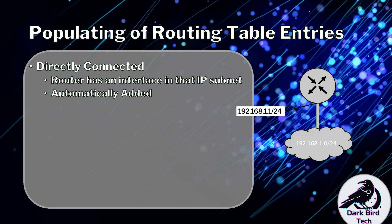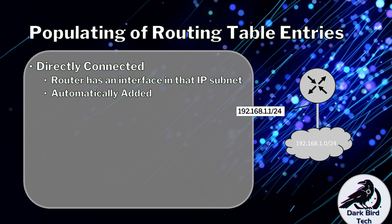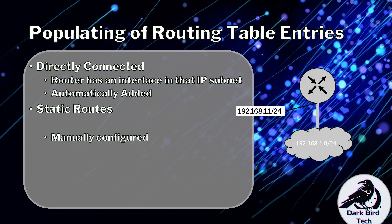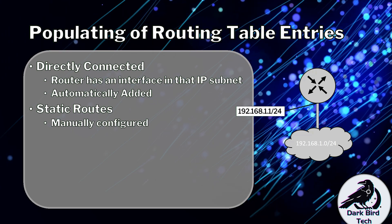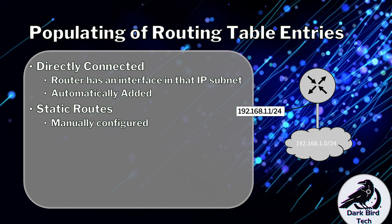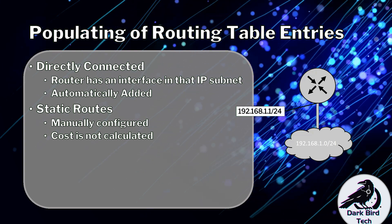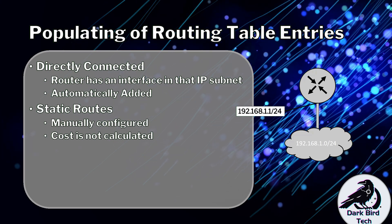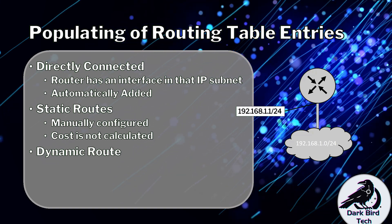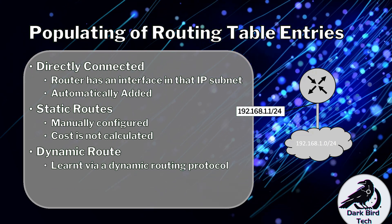No route could have a better cost than a router that has a connection straight into that network. The second method is static routing, which we'll talk about at the end of this video, where we manually configure routes. This is usually used when the destination network is not directly connected and there is no cost calculated. The third option is a dynamic route added via a dynamic routing protocol, which we'll discuss in the next video. With dynamic routing, cost does get factored in.